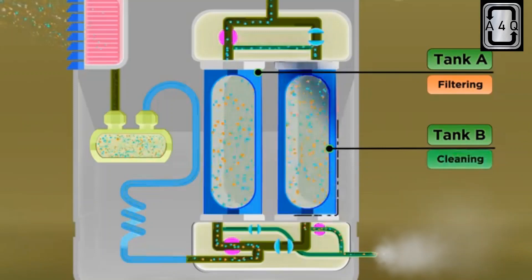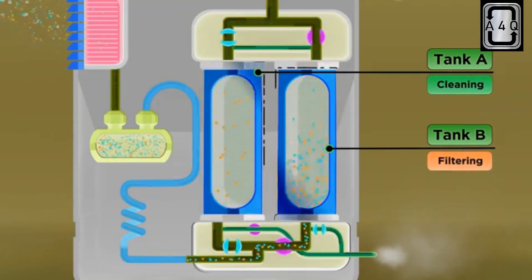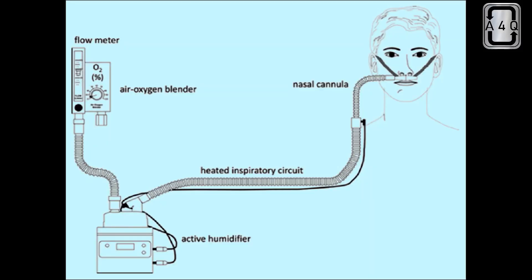This process of switching the sieve beds is known as pressure swing adsorption. The output of oxygen is then controlled using a flow meter where the flow can be set manually in liters per minute.